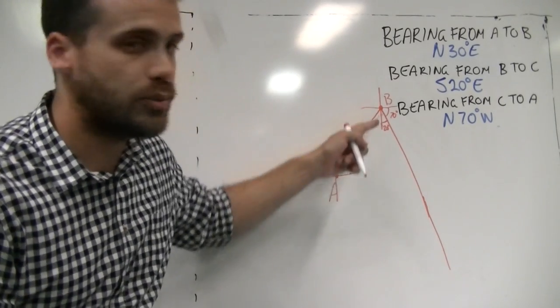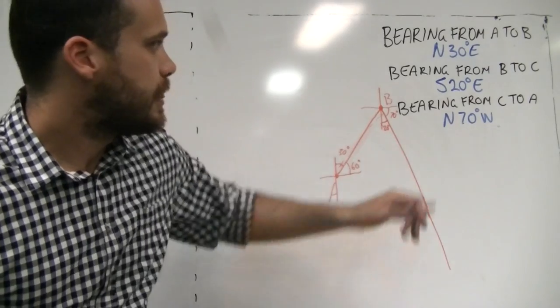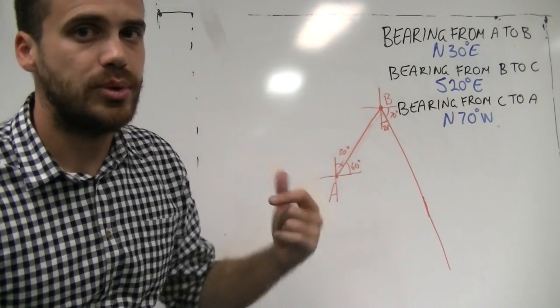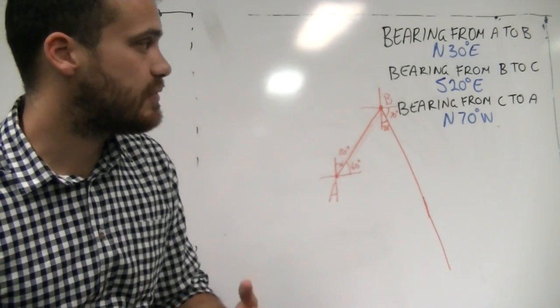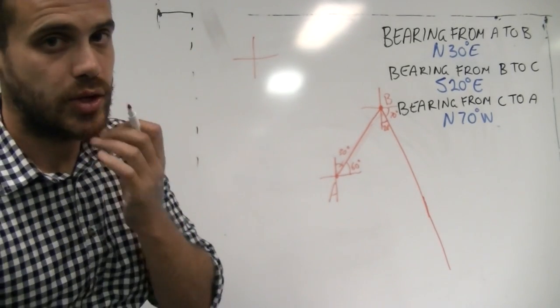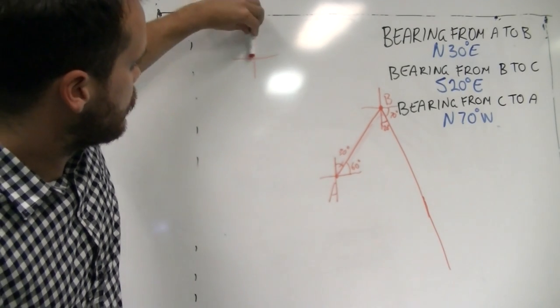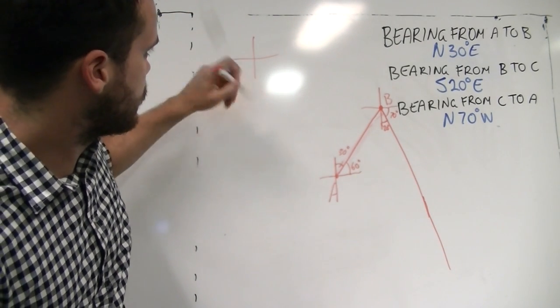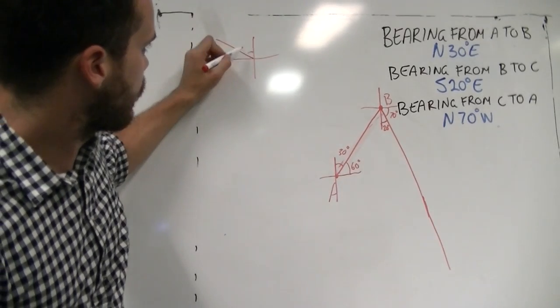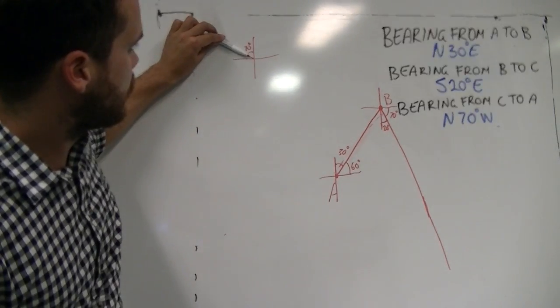Person C exists somewhere along there, but this third piece of information will tell us where. The bearing from C to A is north 70 degrees west. I'm just going to draw that up here so you can see what it looks like. North 70 degrees west. So, north and then go 70 degrees to the west. It looks something like that.